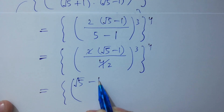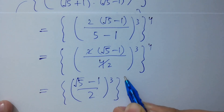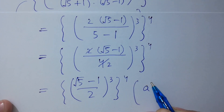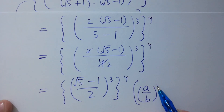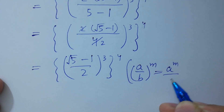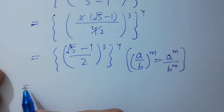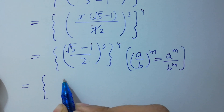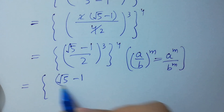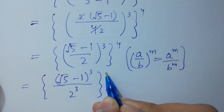Since (a/b)^m = a^m / b^m, we get (square root of 5 minus 1) cubed, over 2 cubed, to the whole power 4.